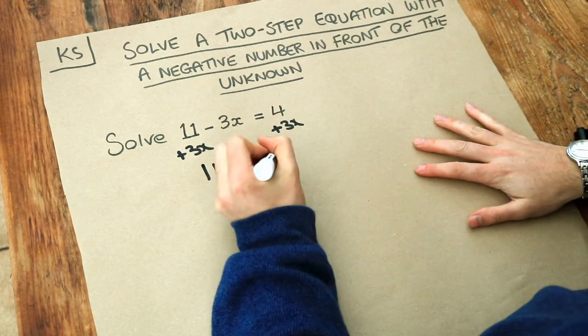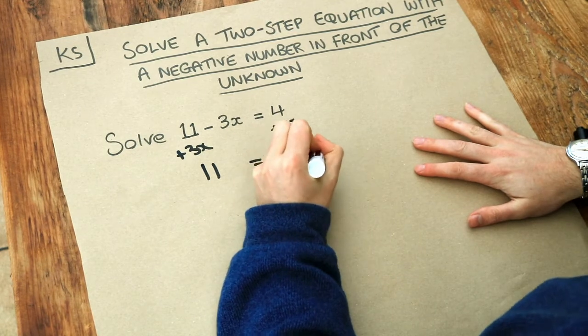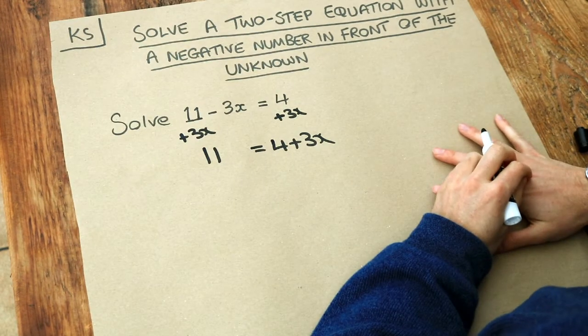If we add 3x to this side, we get 4 plus 3x. And then we don't have any negative numbers to worry about at all in this particular case.